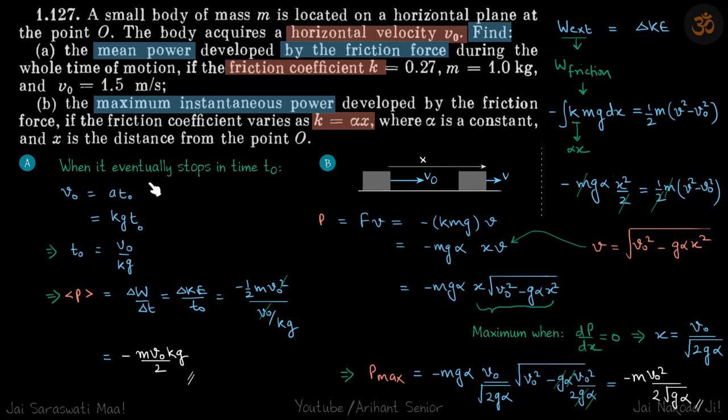While sliding, the acceleration is constant and its value is kg. So we can use our equation of motion: v₀ equals at₀, and we get t₀ equals v₀ divided by kg.